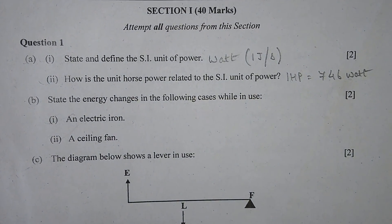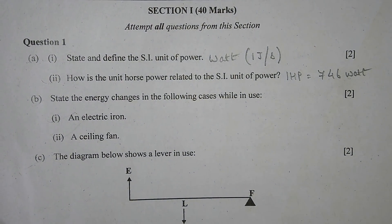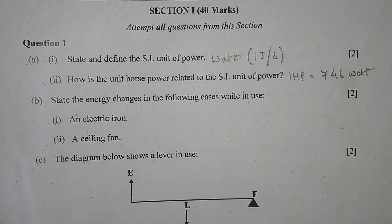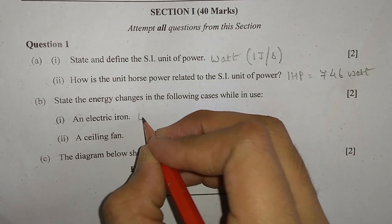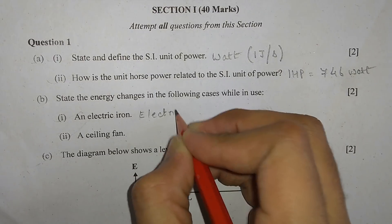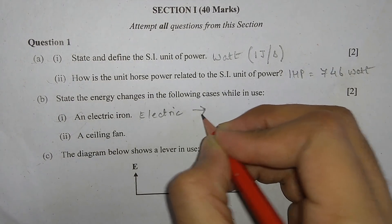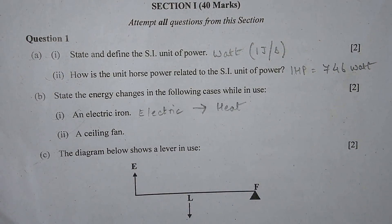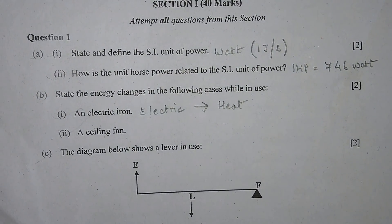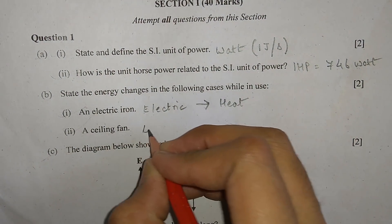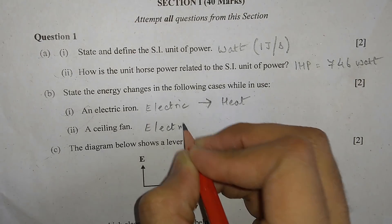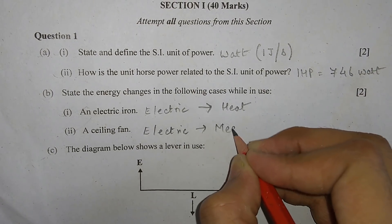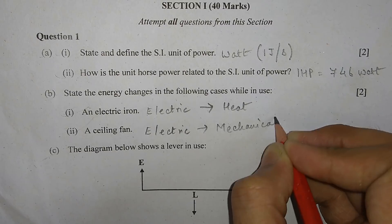Part B: State the energy changes in the following cases while in use. Number 1, an electric iron — electric energy to heat energy. Number 2, a ceiling fan — electric energy to mechanical energy.